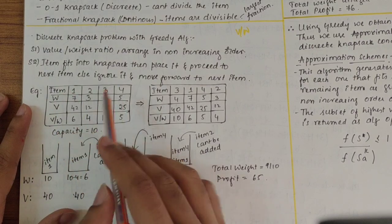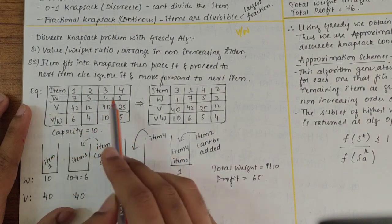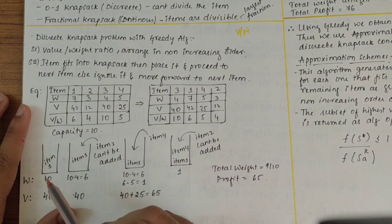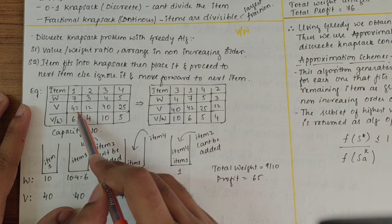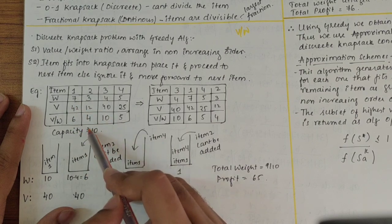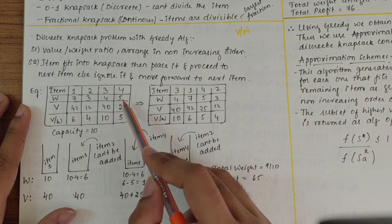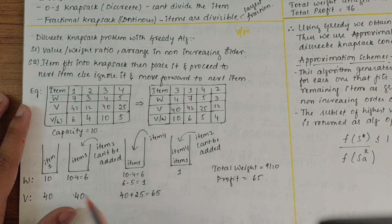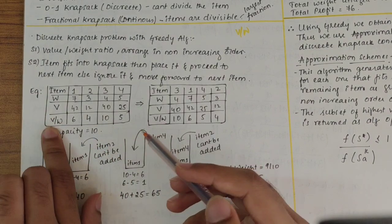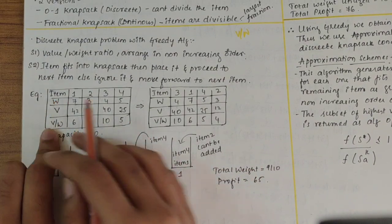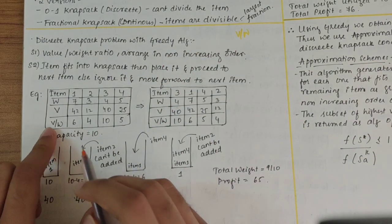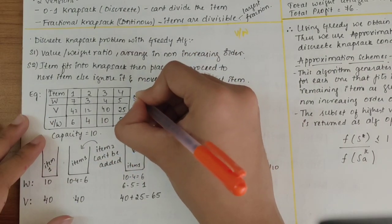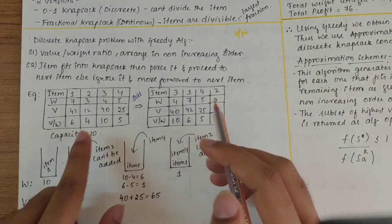Here they have given an example. Four items are there, weights are given, values are given. I'll calculate V by W. If I calculate V by W: 42 by 7 I get 6, 12 by 3 I get 4, 40 by 4 I get 10, and 25 by 5 I get 5. Now if you look at V by W ratio, it is not in decreasing order.